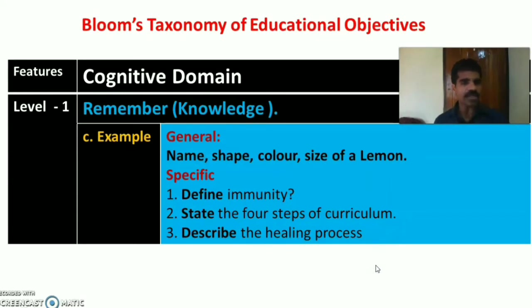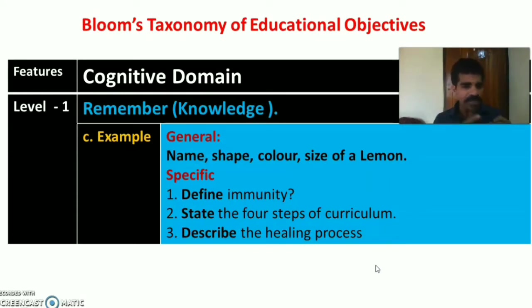A general example for cognitive domain level one — remember — is to remember the name, shape, color, and size of a lemon.